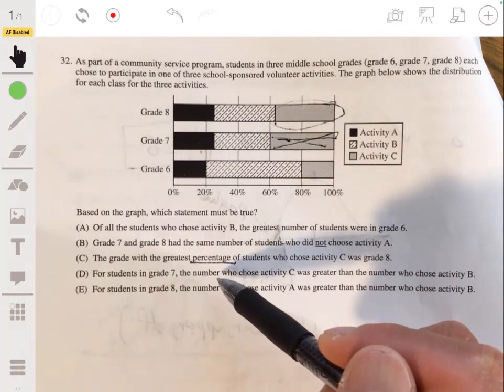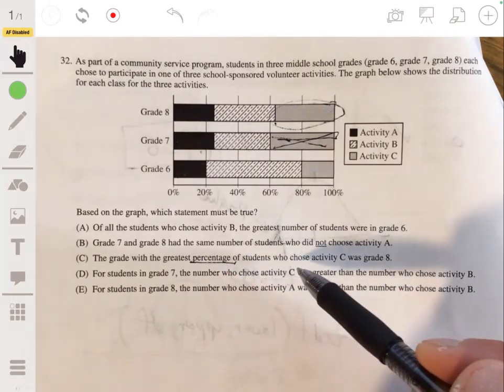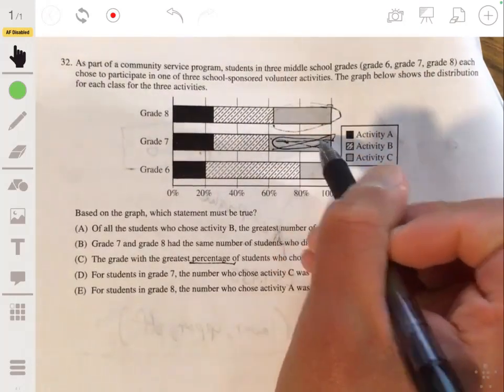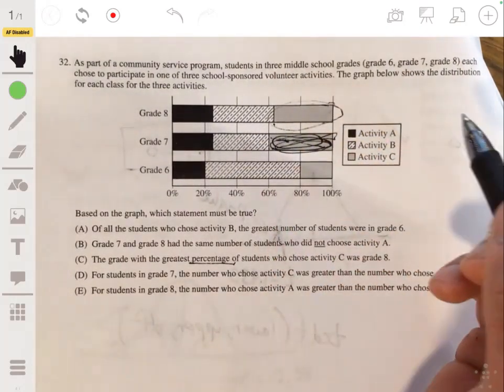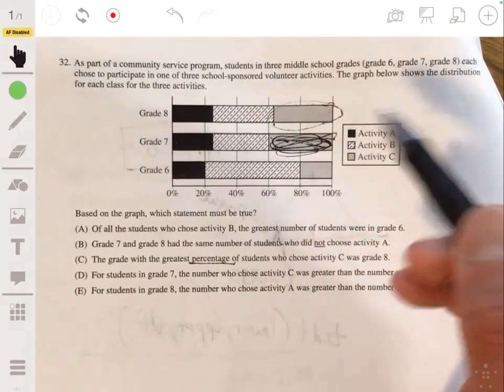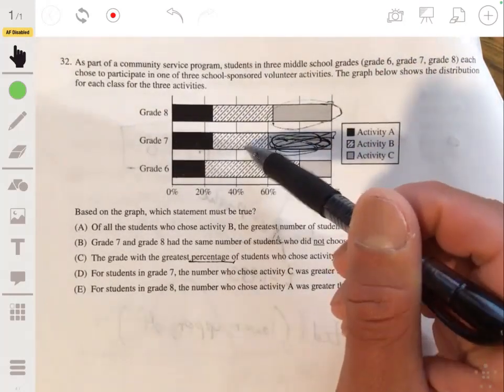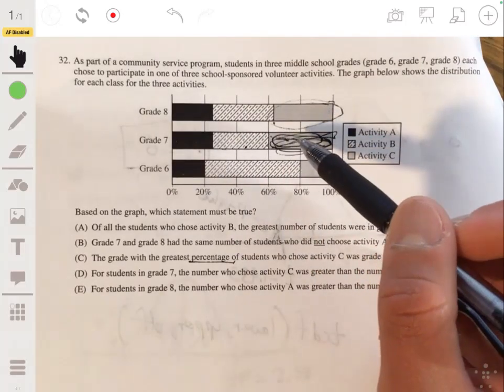And part D, for students in grade seven, the number who chose activity C was greater than the number who chose activity B. Yeah, so within its own grade, you can say that this amount, the count here is more than the count here, because it's proportioned but within the amount.